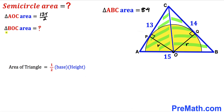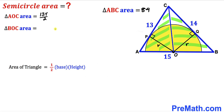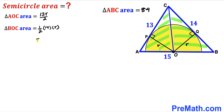For triangle BOC, we use the same area formula. The base is 14 units and the height is r. So the area equals one-half times 14 times r, which simplifies to 14r divided by 2.